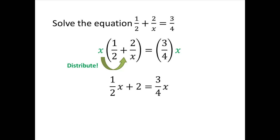And when we multiply x by 2 over x, the x's cancel. So we get a new equation which looks like 1 half x plus 2 equals 3 fourths x. We still have those fractions, but we don't have an x in the denominator anymore.